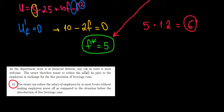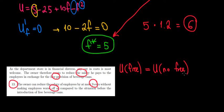The owner wants to reduce the salary that he pays to the employees in exchange for free coffee. Now the owner can reduce the salary by at most 9 euros without making the employees worse off. So what we want to know is in which case would be the utility of the employees with the free coffee. So we will have here free coffee the same as the utility of not having free coffee. So no free coffee.